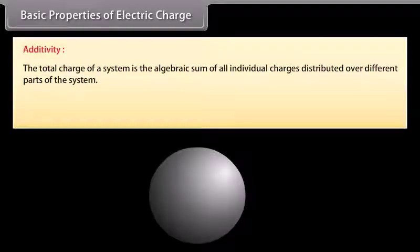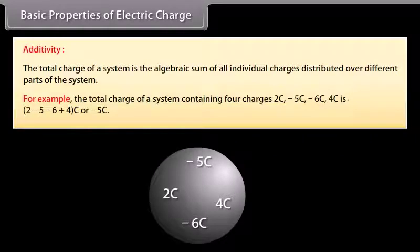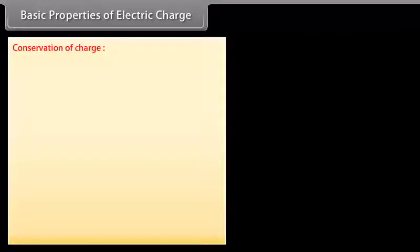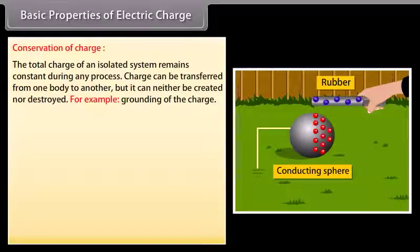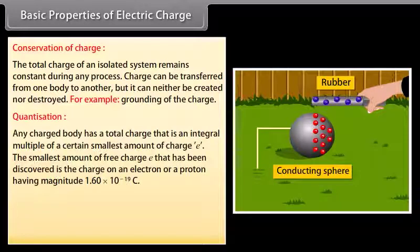Basic properties of electric charge — Additivity: The total charge of a system is the algebraic sum of all individual charges. For example, a system with charges +2C, −5C, −6C, and +4C has a total charge of −5C. Conservation of charge: The total charge of an isolated system remains constant; charge can be transferred but neither created nor destroyed. Quantization: Any charged body has a total charge that is an integral multiple of the smallest charge e.